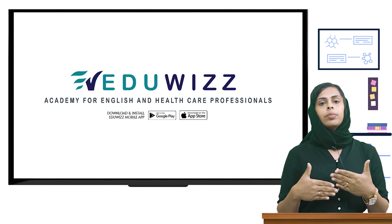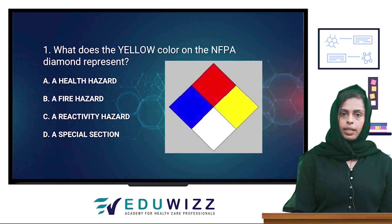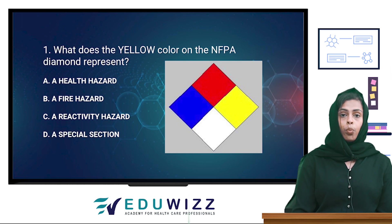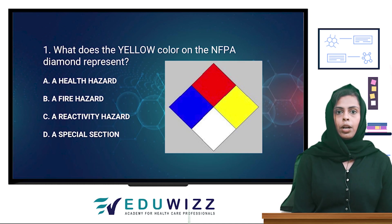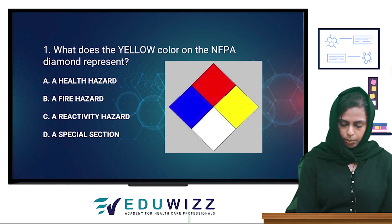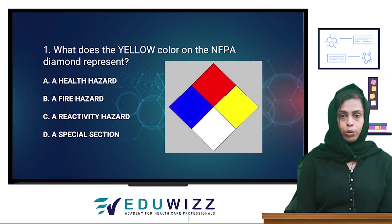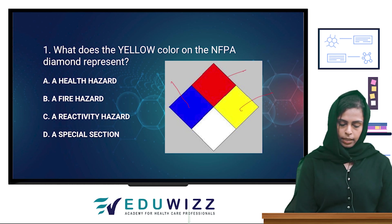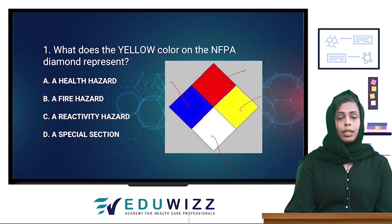Let's go to the next question. The first question is: what does the yellow color in the NFPA diamond represent? If you can see the picture, we have four colors — blue, red, yellow, and white. There are four options: a health hazard, a fire hazard, a reactivity hazard, and a special reaction.